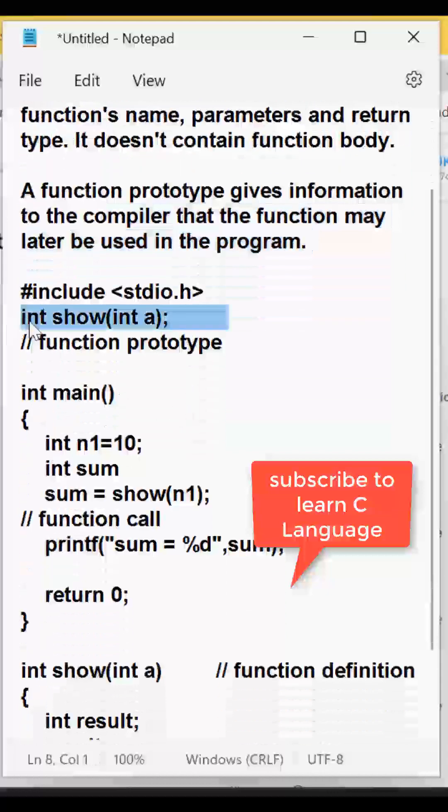So here is an example. This part, the selected part is called as function prototype in which we are telling that show is a function name, int is its return type, and only one argument is being passed here.